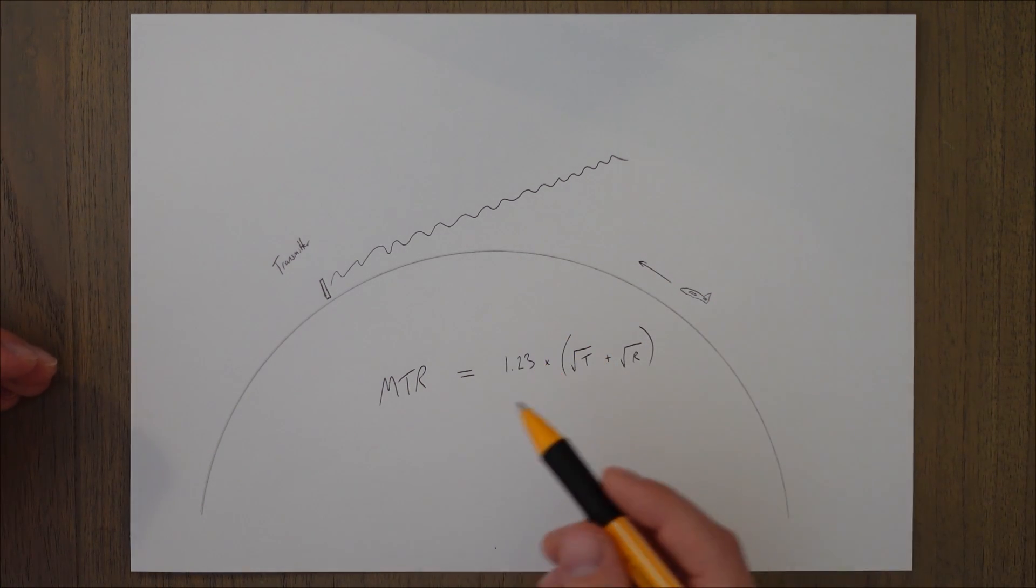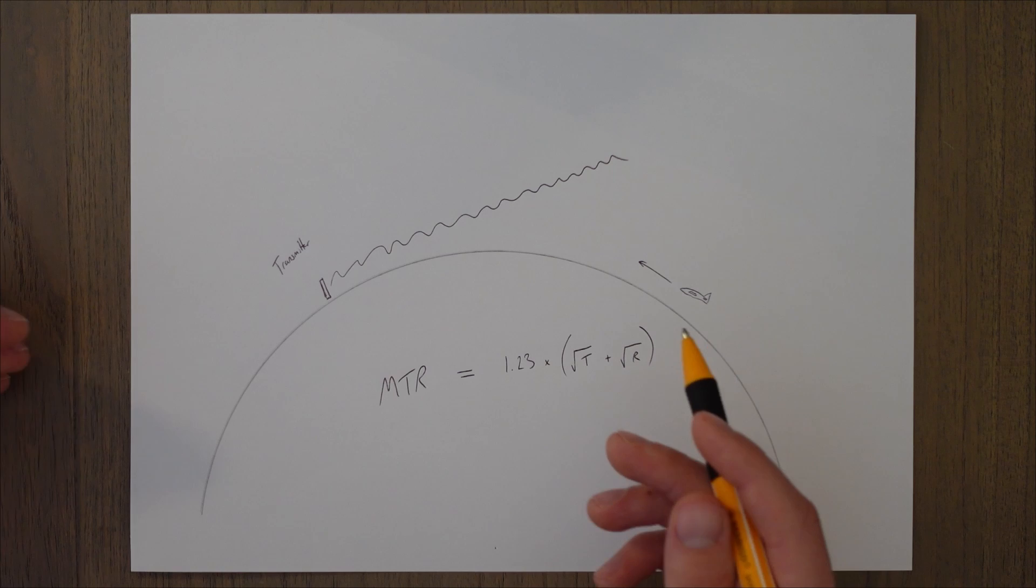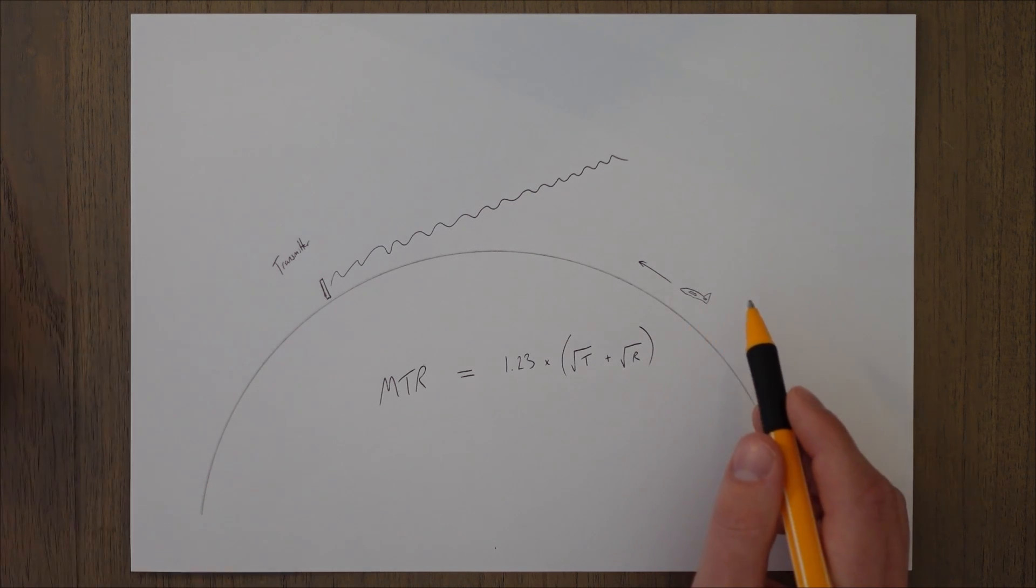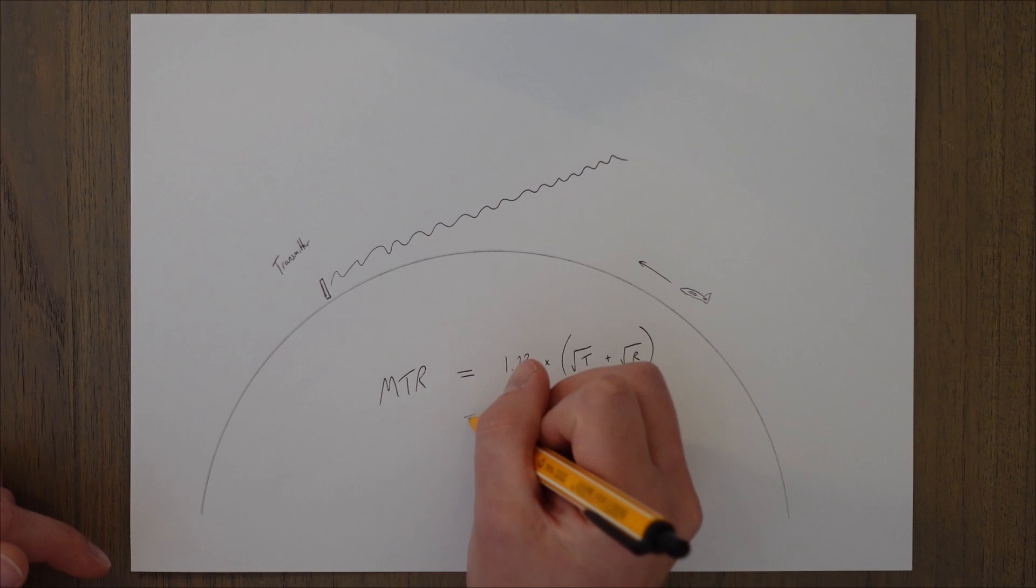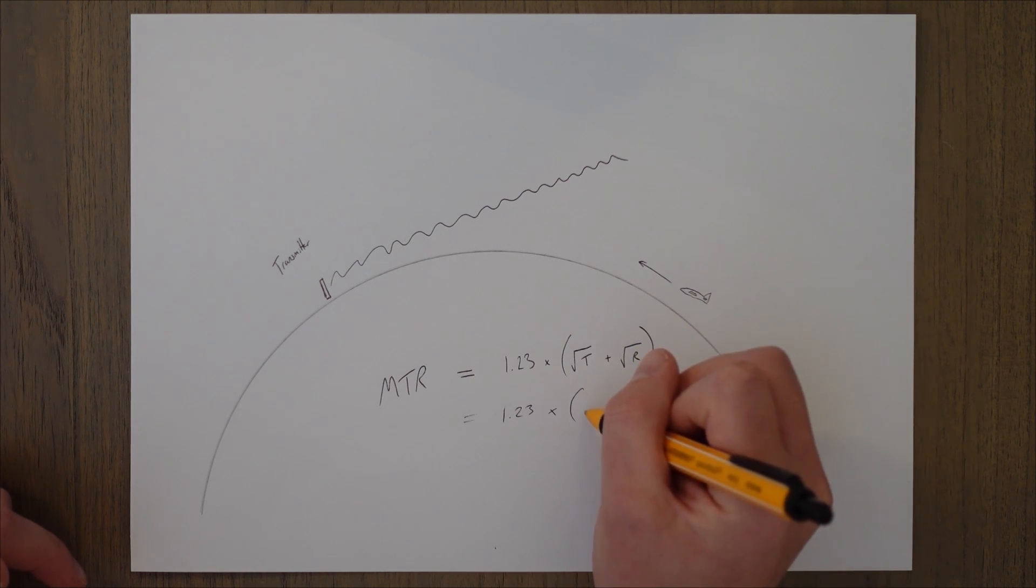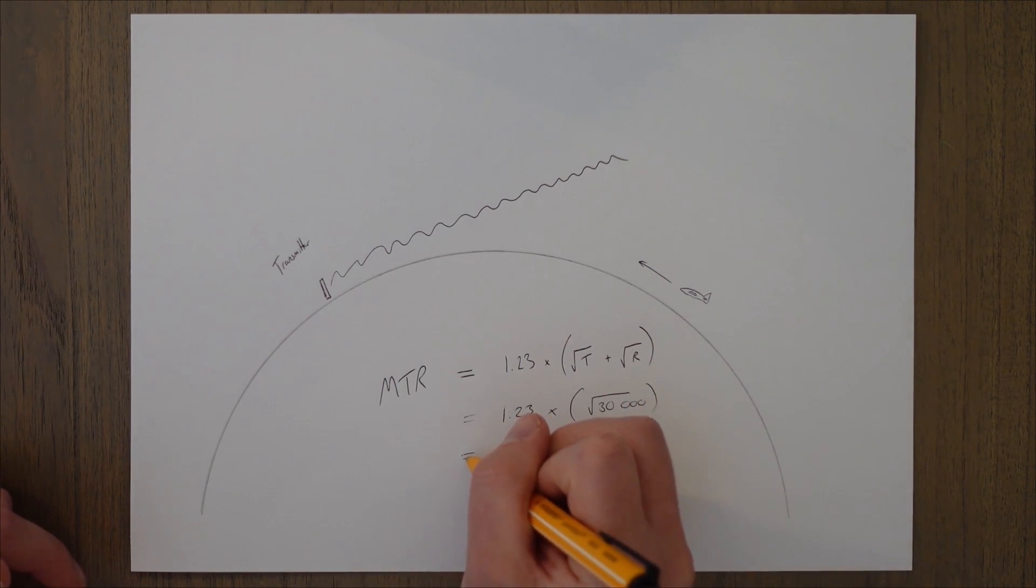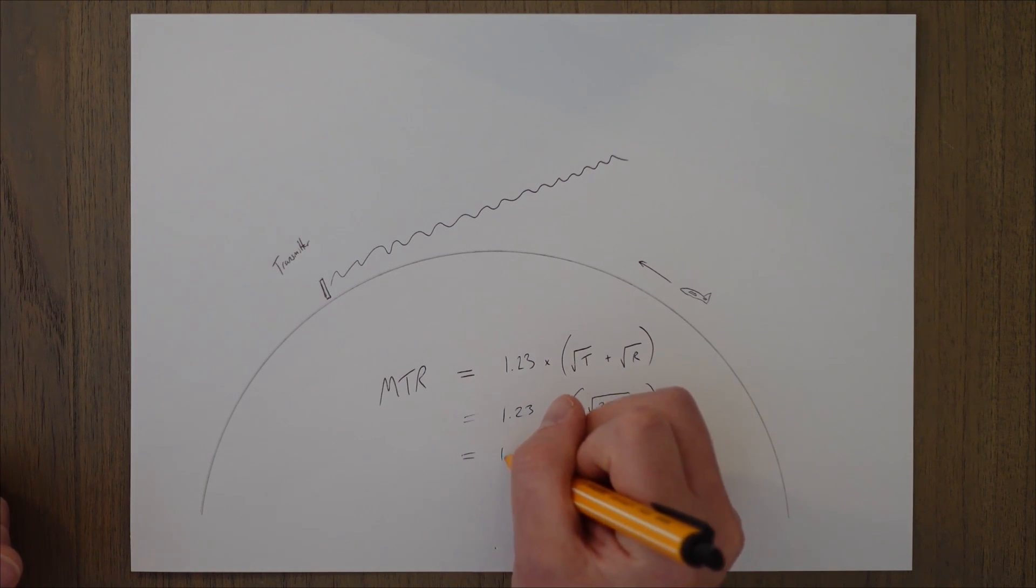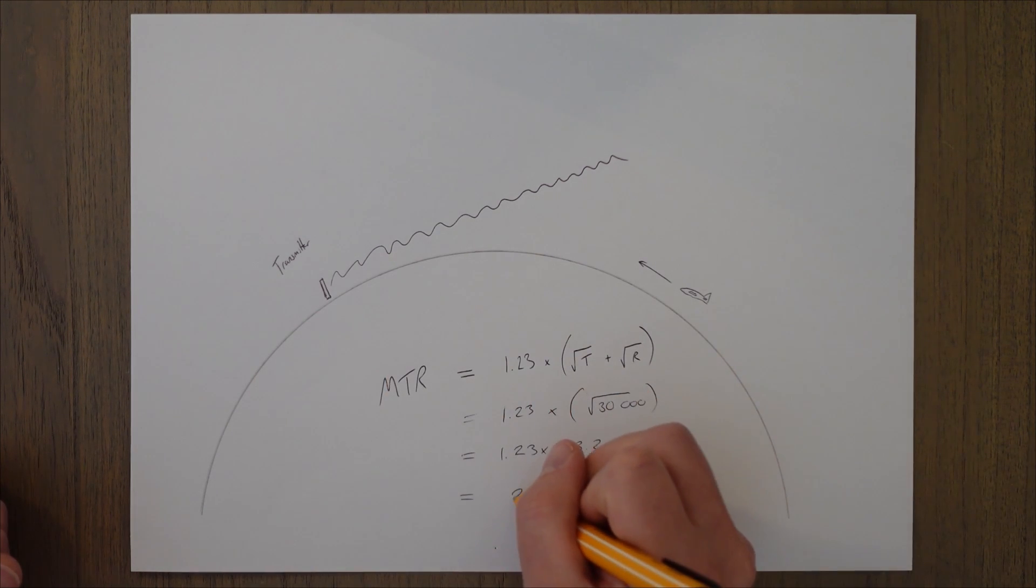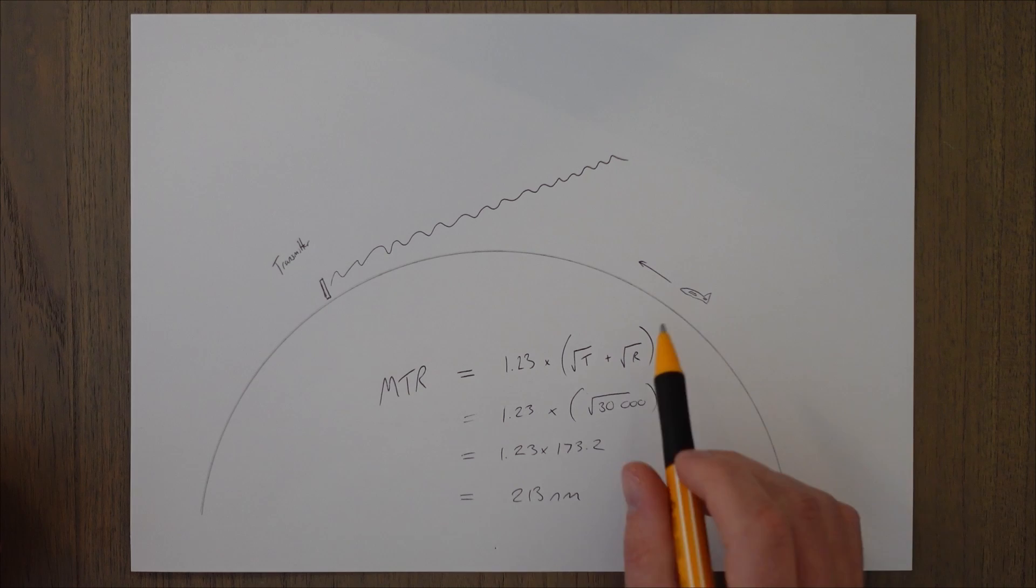So the formula we use for the max theoretical range is 1.23 times the square root of the transmitter height plus the square root of the receiver height. So if we take an example of the transmitter here being at sea level and the aircraft traveling at 30,000 feet for example, we can calculate the max theoretical range quite easily. All we have to do is 1.23 times the transmitter height, that's going to be zero, square root of zero is zero, times the square root of the receiver height. We'll just do it in feet, so 30,000 feet. If you pop that into your calculator you'll get something along the lines of 1.23 times 173.2 which comes out as 213 nautical miles. So it's good for calculating a rough range of signals for when you're at a certain altitude.